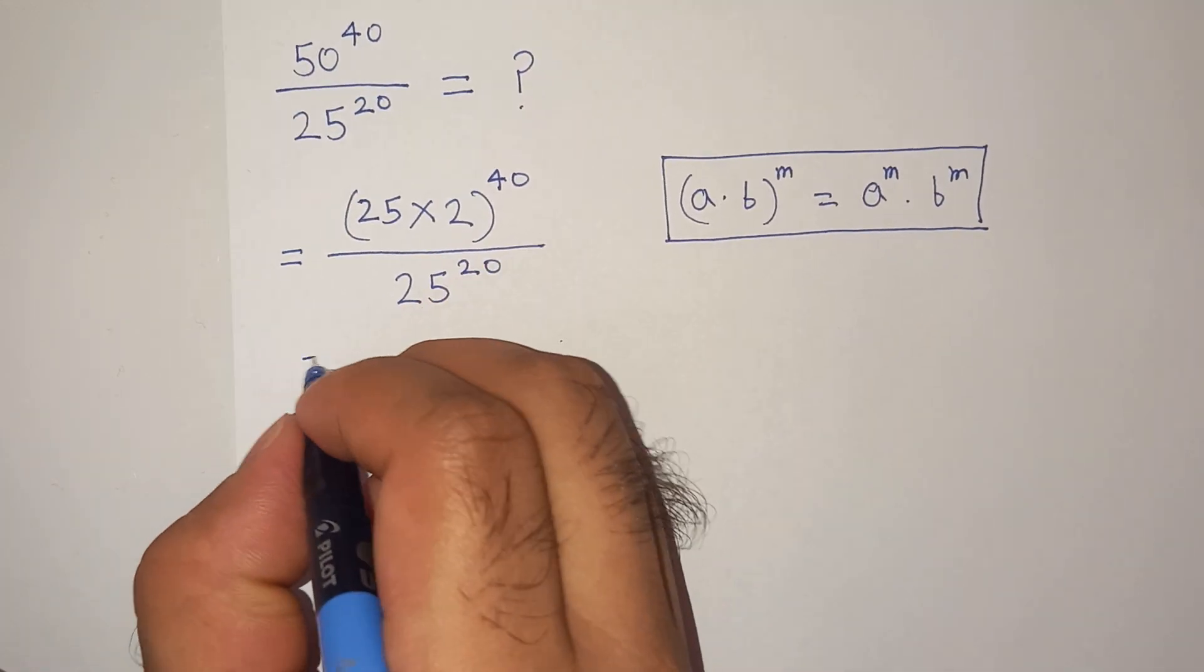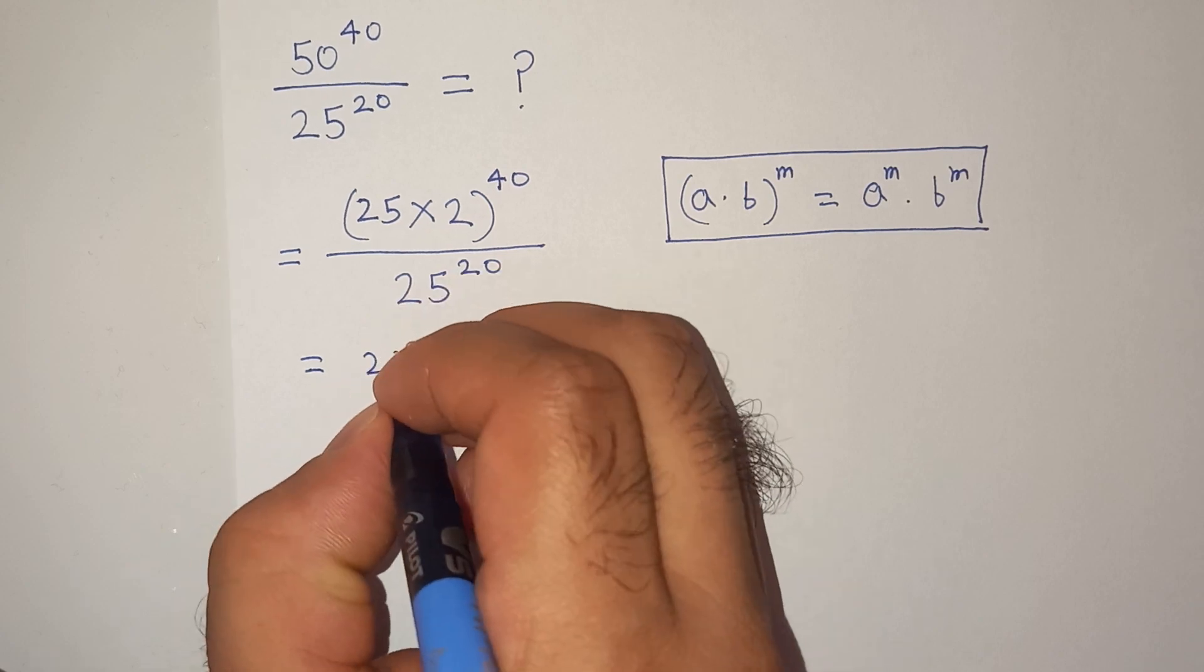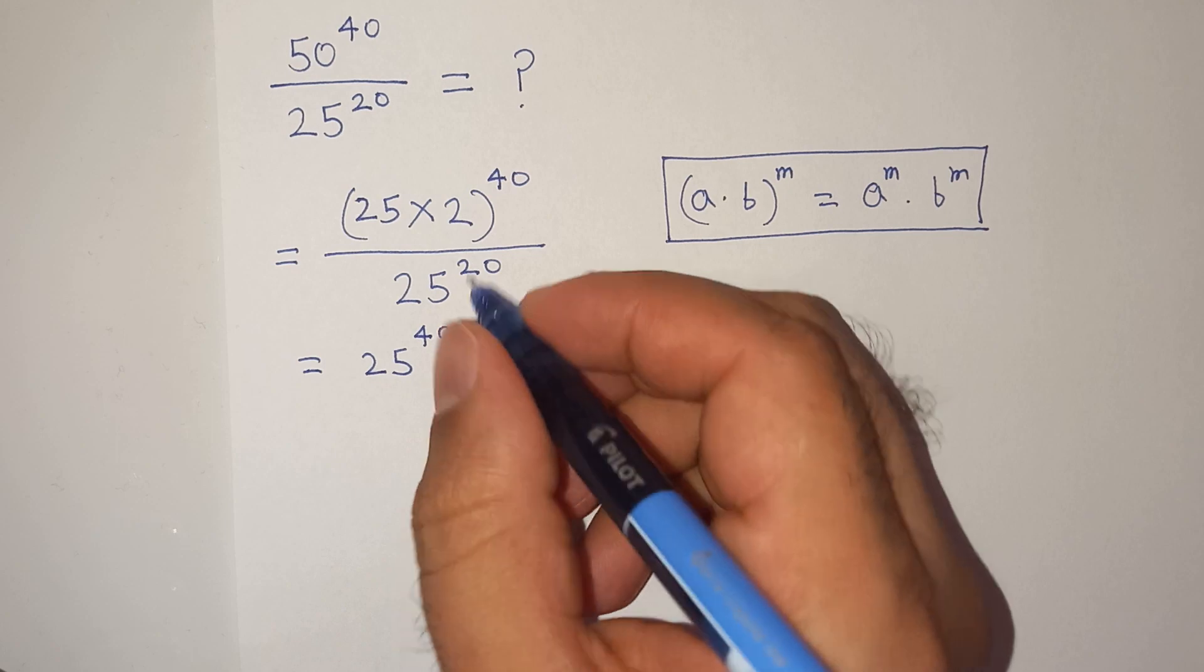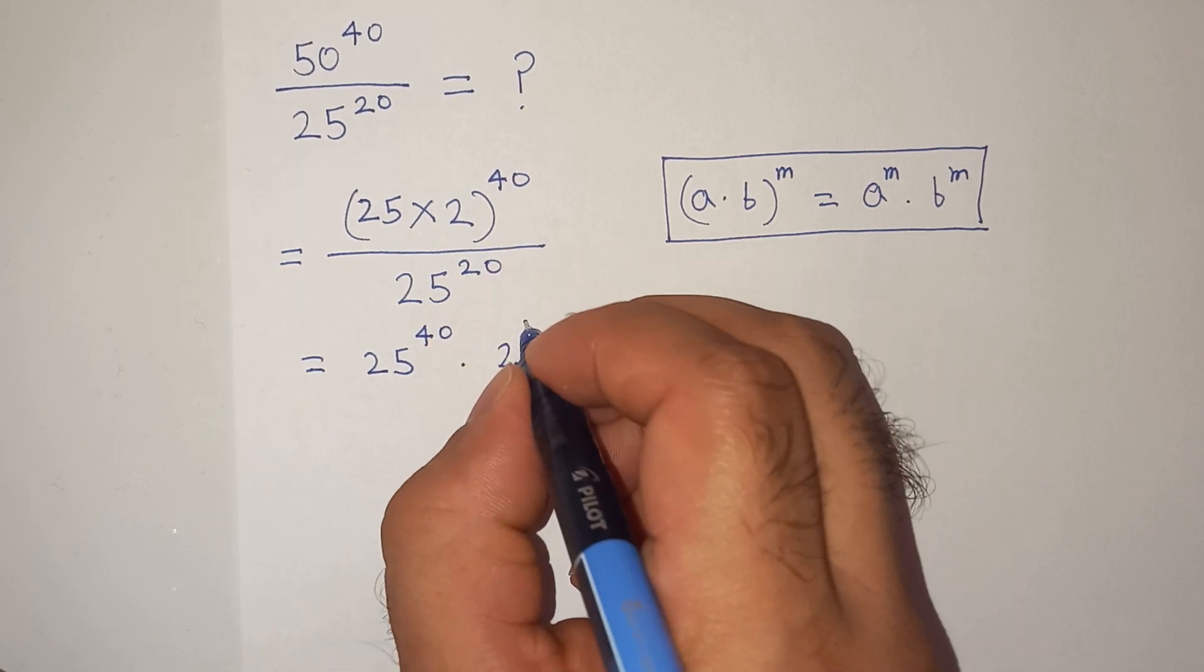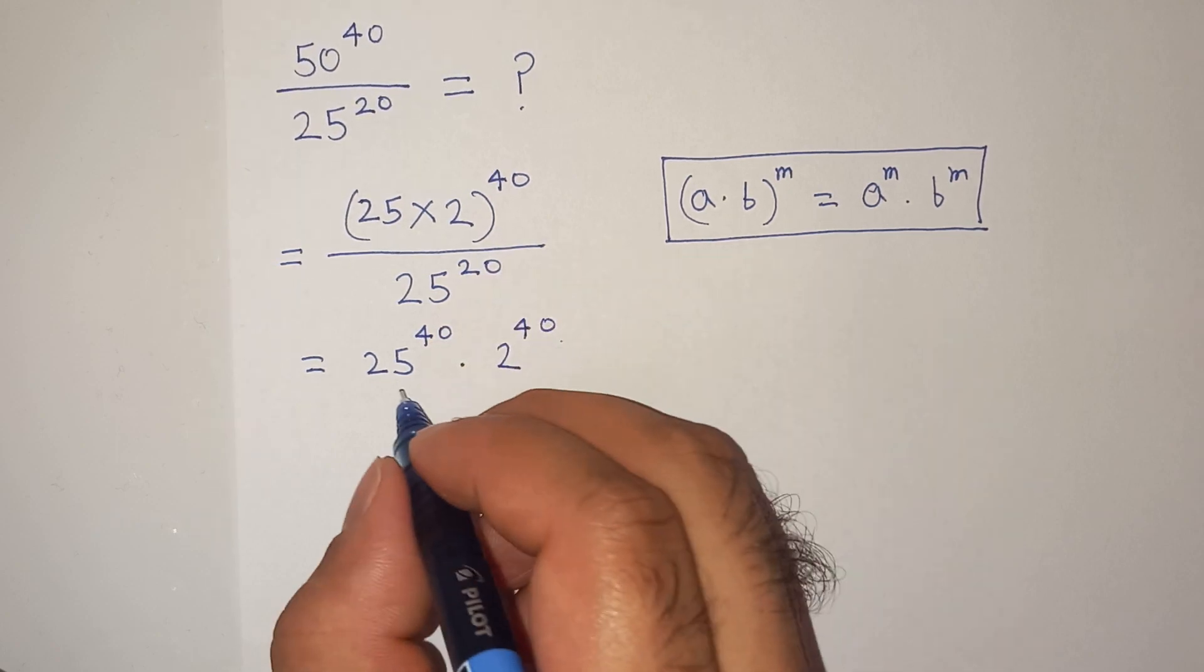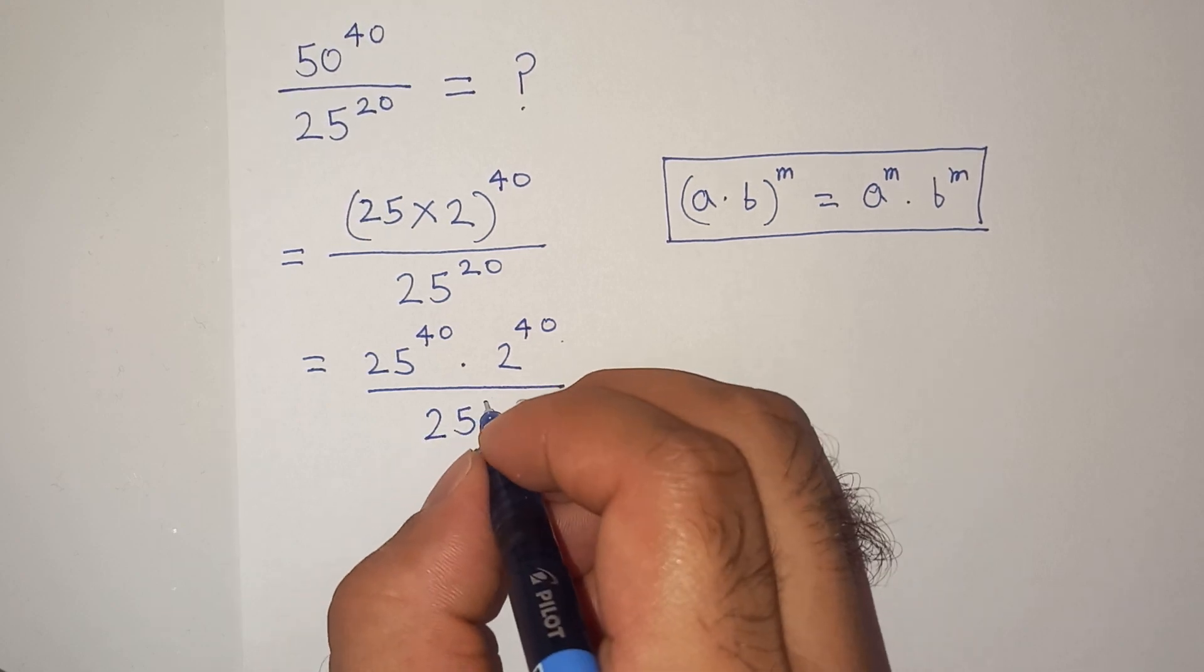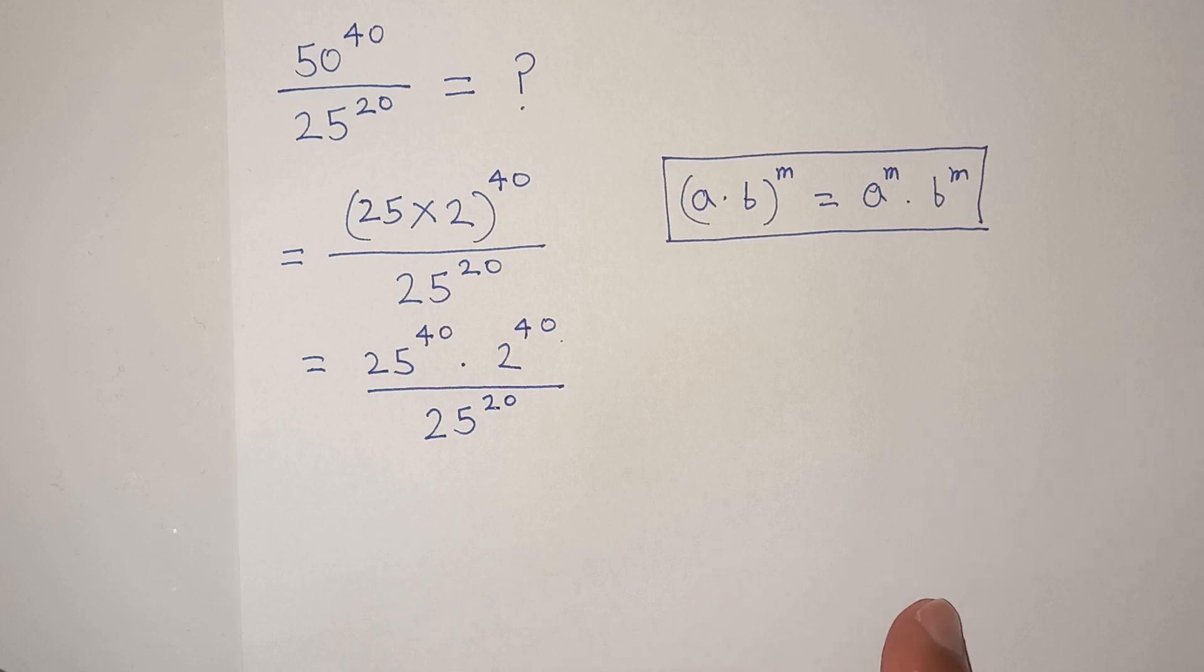So this will be 25 power 40 multiplied by 2 power 40 divided by 25 power 20. Right?